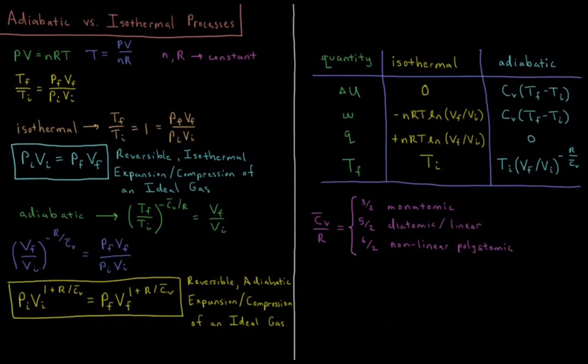This video will be a comparison and summary of the adiabatic and/or isothermal expansion and compression of ideal gases. From the ideal gas equation PV = NRT — pressure times volume equals number of moles of gas times gas constant times temperature — we can see that the temperature of an ideal gas is PV over NR.